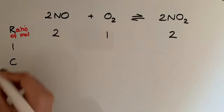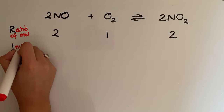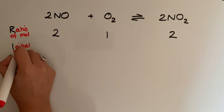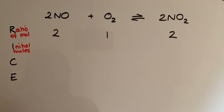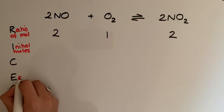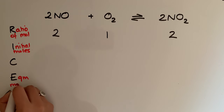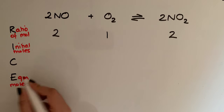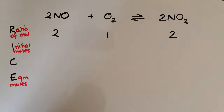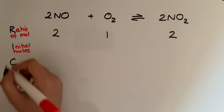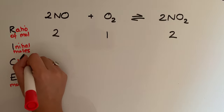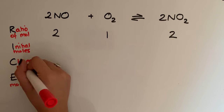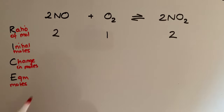The I stands for initial moles — the moles at the beginning. The E stands for equilibrium moles — the moles at the end when we reach equilibrium. And the C stands for the change in moles. So let's now have a look at how this applies to this question.